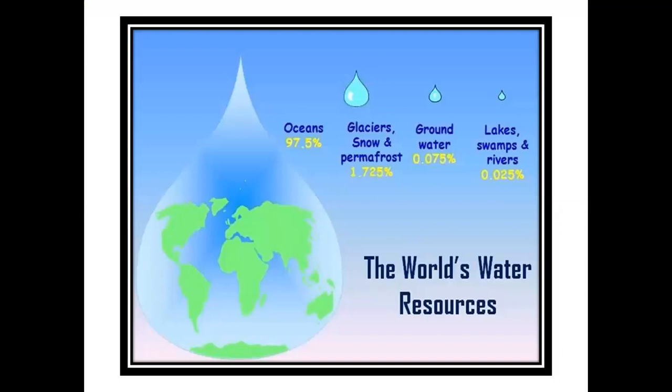The world's water resources: ocean contains 97.5%, glaciers, snow and permafrost 1.75%, groundwater 0.075%, lakes, swamps and rivers 0.025%.